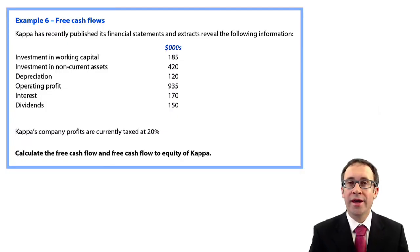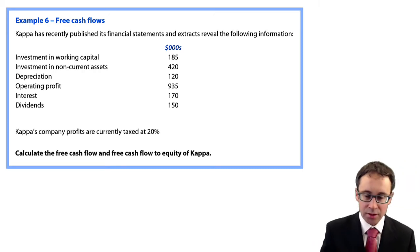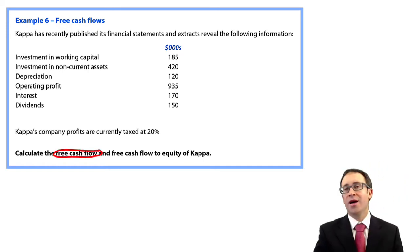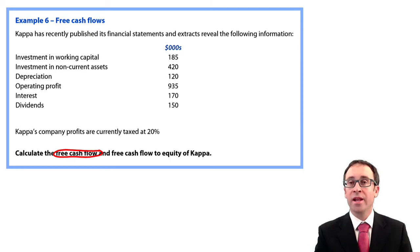Let's go through and work the example that we have on free cash flows and free cash flows to equity. If we look at the requirements, it says to calculate, first of all, the free cash flow. Remember, that's the cash flows that are available to the debt and the equity holders.